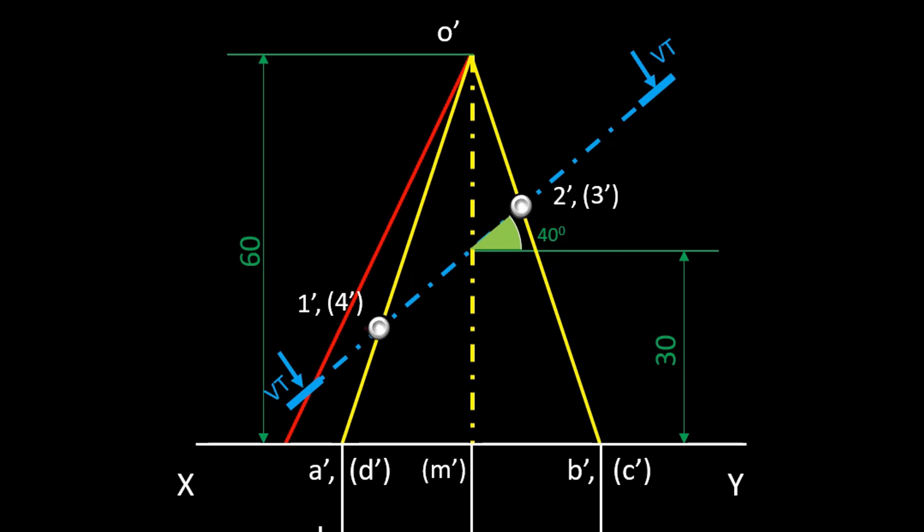The true position of the section points can be found by projecting those section points onto a true length line. Projecting the points 1 and 4 to the true length, we will get the true position of section points on the true line. Same in the case of section points 2 and 3. The dimension from the apex to the section point should measure from the true length line only.